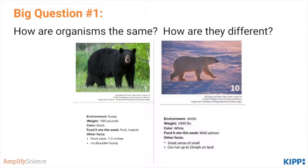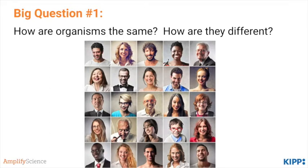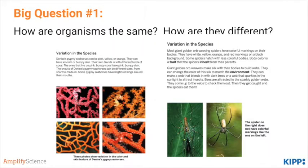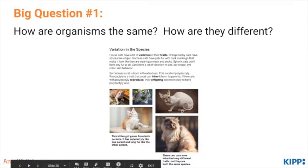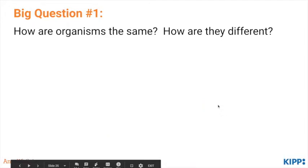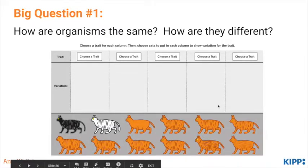In lesson six, they look at human traits and realize that within a single species there are many, many different variations. In lesson seven, they look at other examples of species and variation within a species — for example, pygmy seahorses, spiders, and kitty cats. Lesson eight is an optional lesson to continue to reinforce the idea that there's variation within a species, and students look at cat variation.